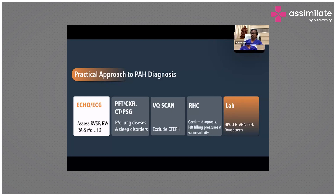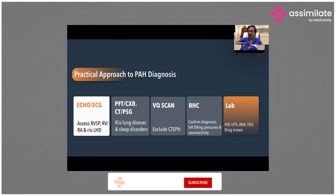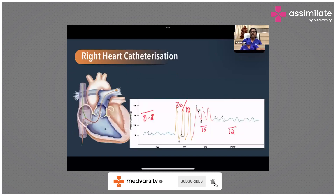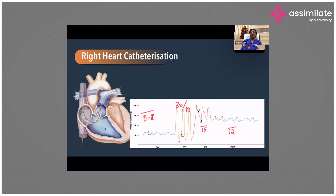Other tests like HIV, LFTs, ANA, TSH, and drug screen can be done in patients with pulmonary hypertension to find out the real etiology. In right heart catheterization, a pressure catheter is sent through the inferior vena cava or superior vena cava into the right atrium, then into the right ventricle, and then into the pulmonary artery. This allows measurement of pressures in the pulmonary artery, right ventricle, and right atrium.